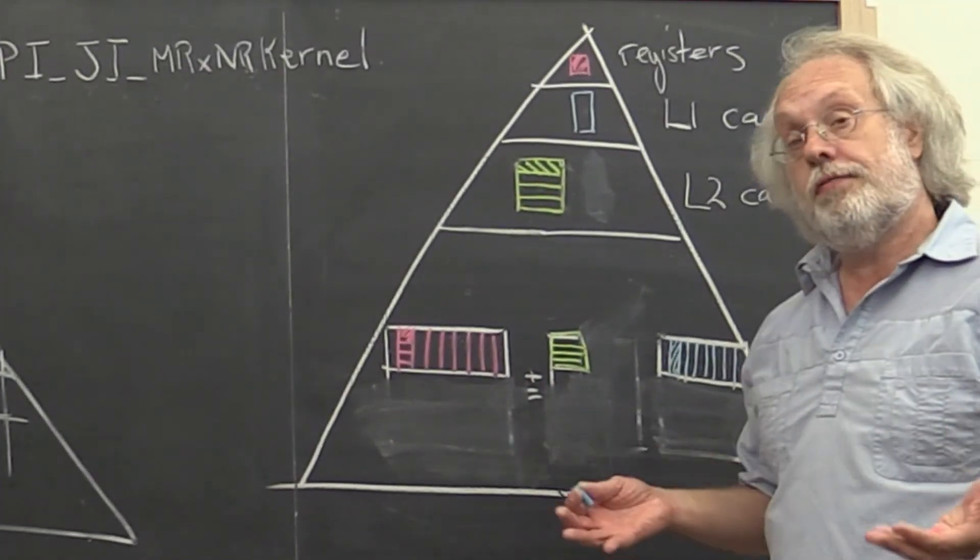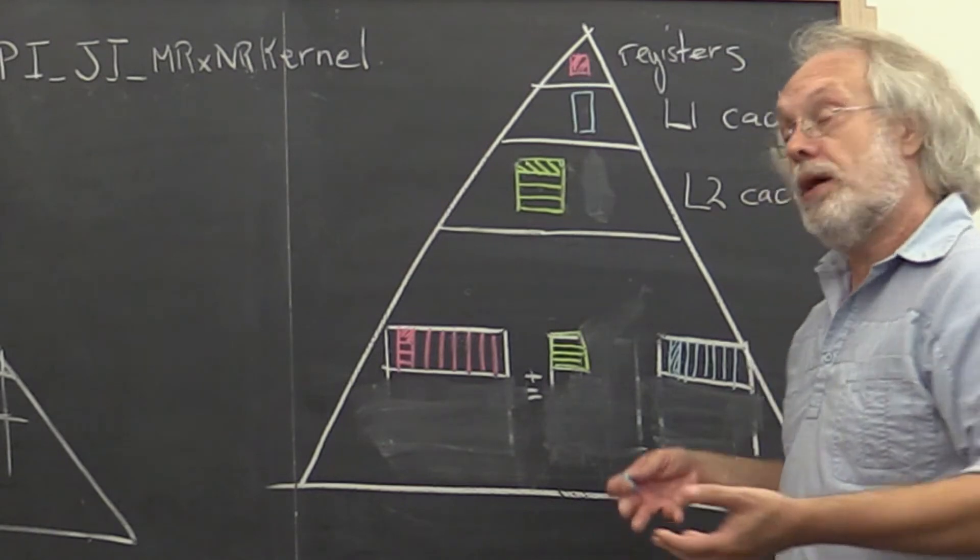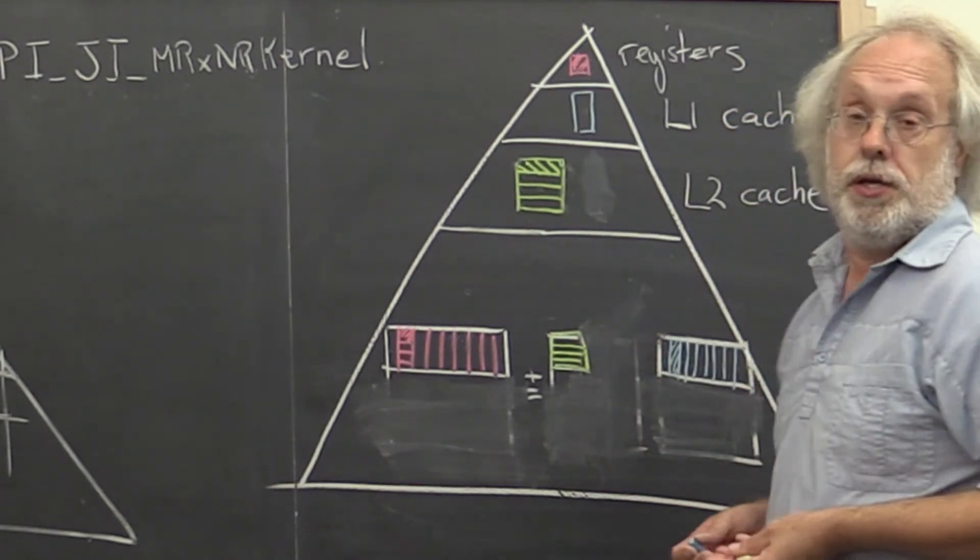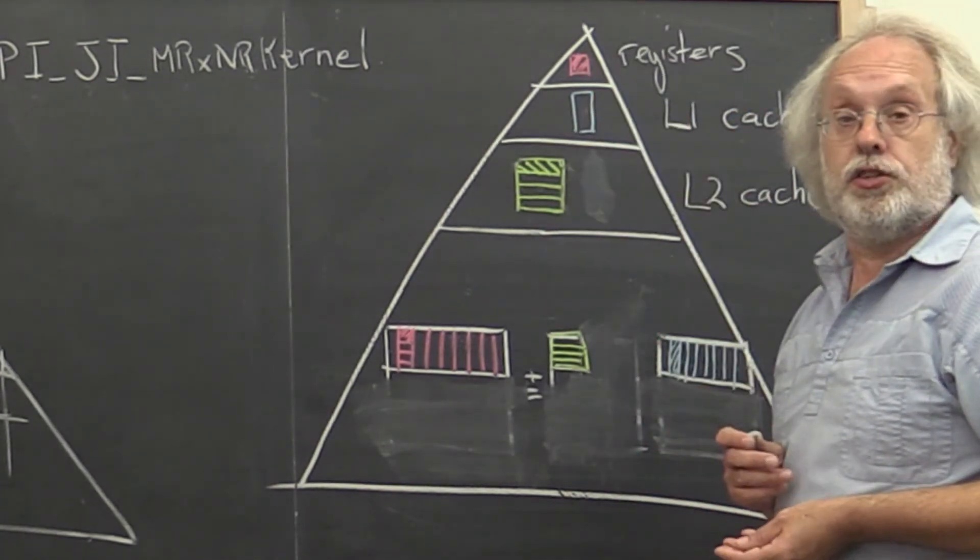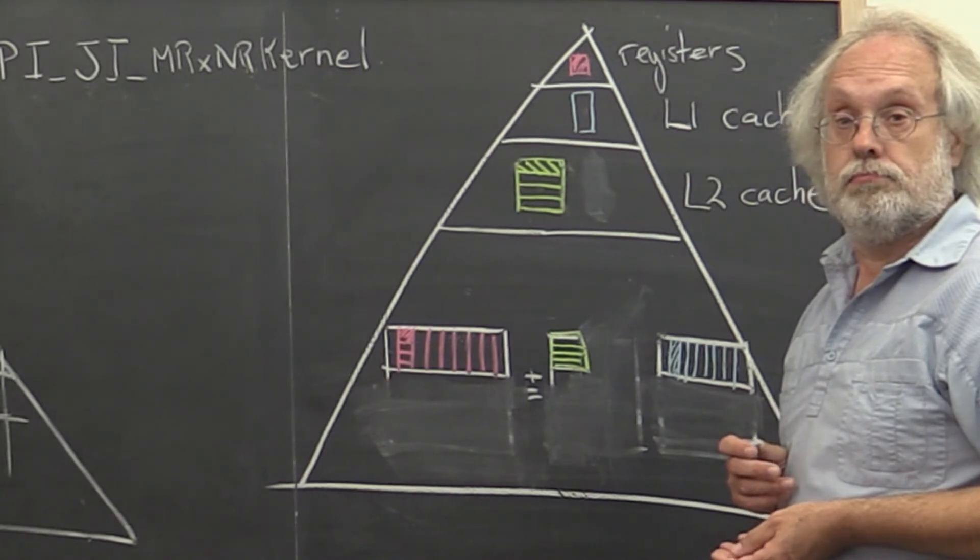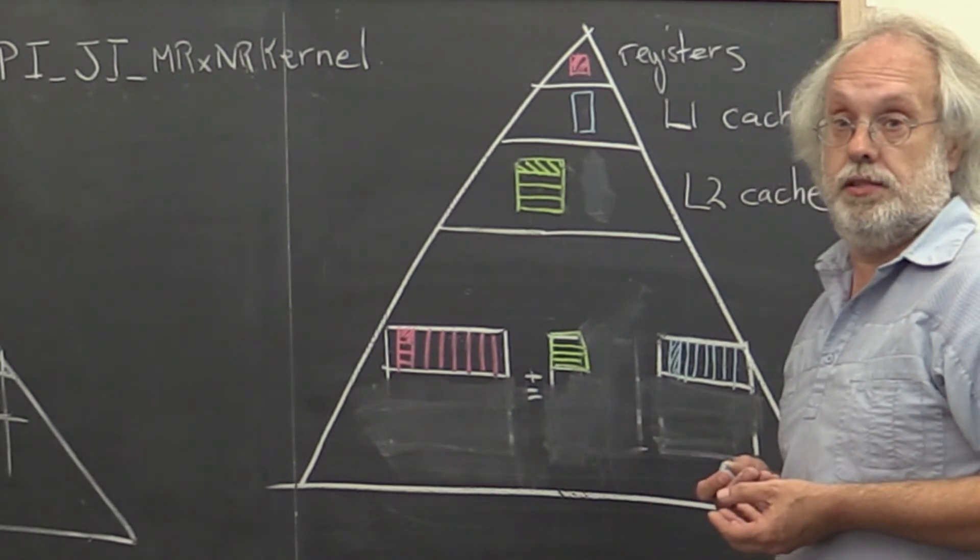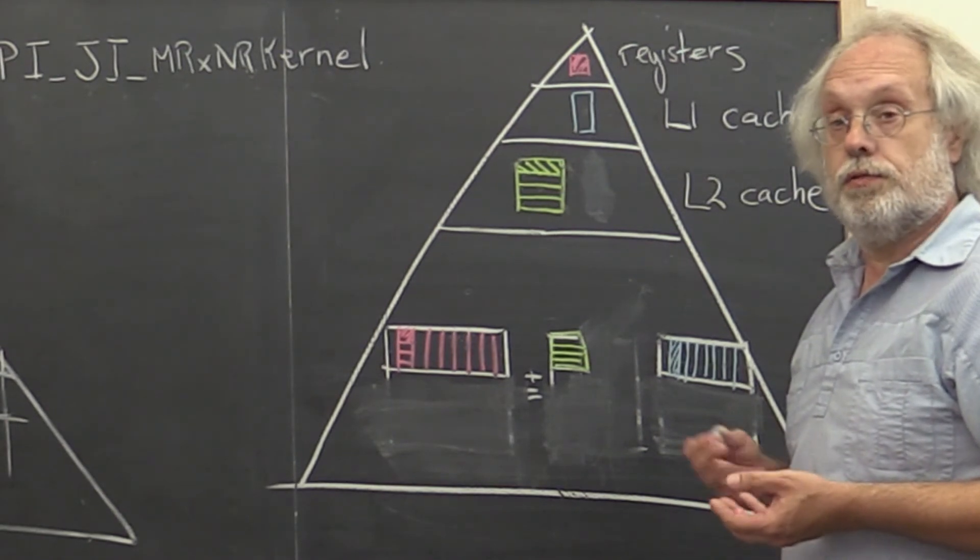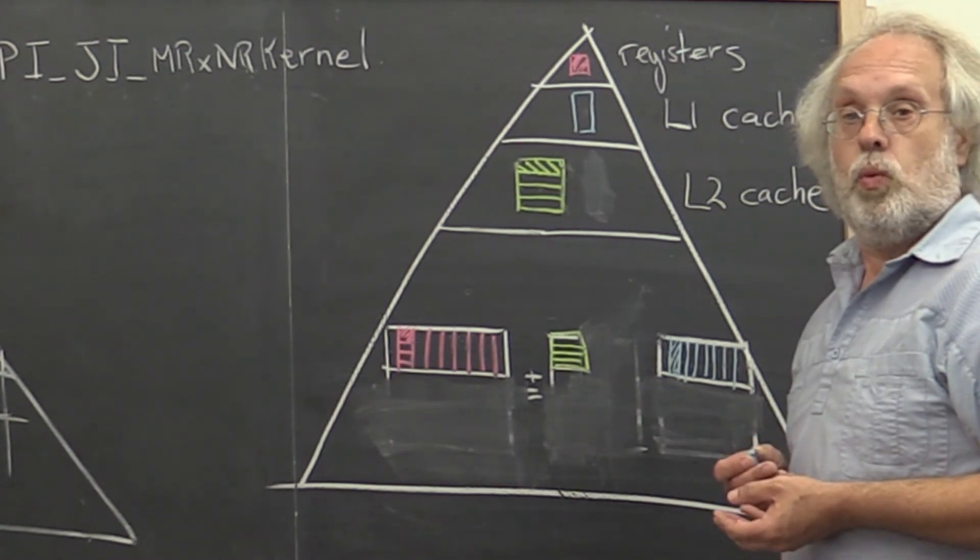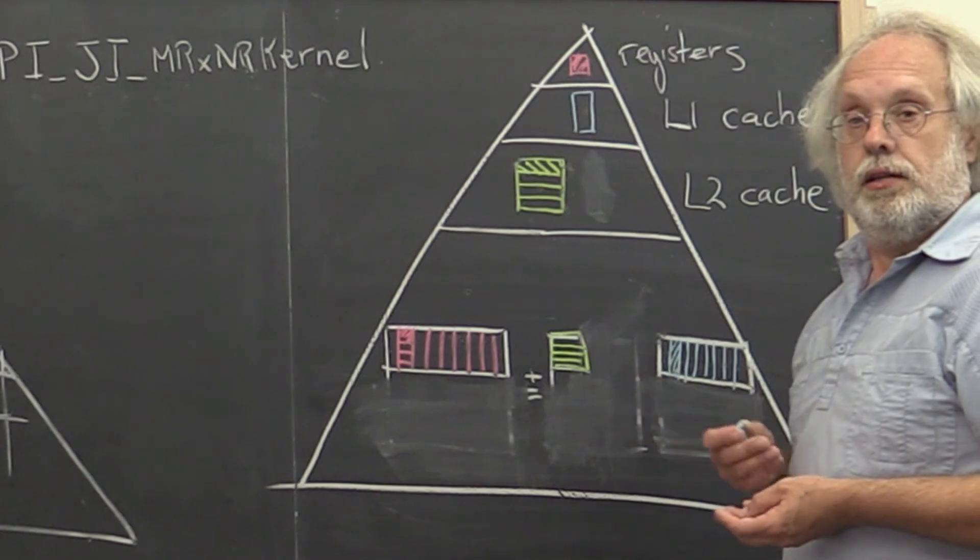So now we have seen how we might usefully use two levels of the cache. But a modern architecture has three levels of cache these days. So for that we're going to talk about what to do next in the next unit.